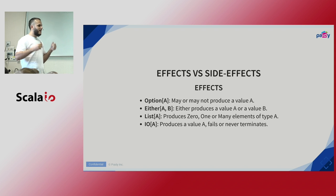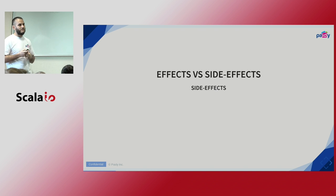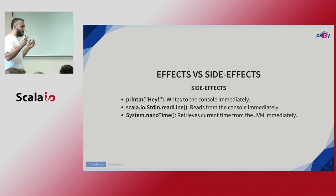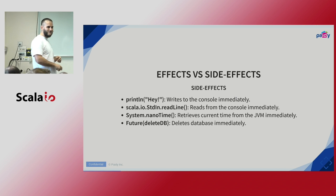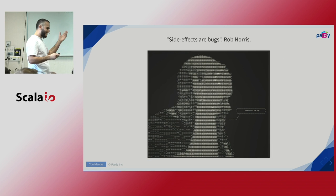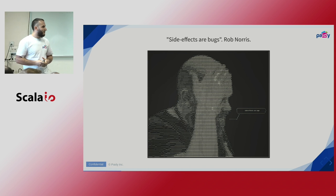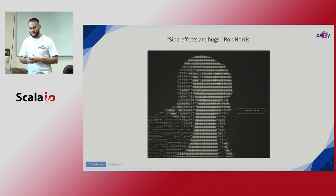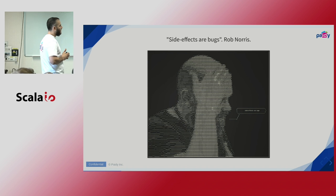On the other hand, we have side effects — for example, printing a line to the console, reading a line from the console, asking for the current time from the JVM, or using Future to wrap a side effect, which is also a side effect. I got inspired to emphasize these topics because of the talk given by Rob Norris last year at Scale by the Bay. We should talk more about this and know how to distinguish between effects and side effects.